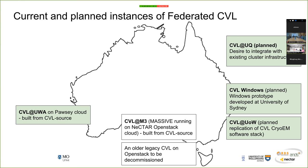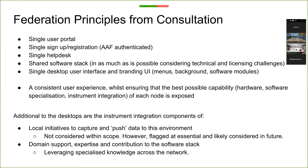It's important to understand that many of the instances are quite different, and different partners in the project require different things. We've gone through a process to work out what federation and what CVL nodes across Australia might look like. As an example, UQ wants to integrate with an existing HPC partner, whereas UWA's instance will be very similar to what we run at Monash and will run basically from source. What we have done is developed a set of federation principles consistent across the entire network of CVL nodes.